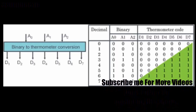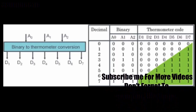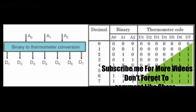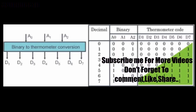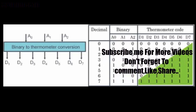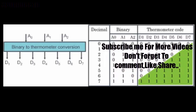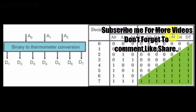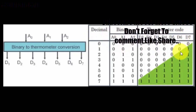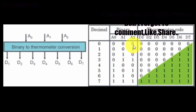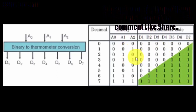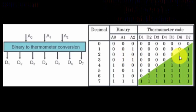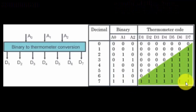Hi YouTube viewers, welcome back to my next tutorial in Xilinx. Today we are going to make a binary to thermometer conversion. This is the aim of our program. Let us see how it looks. This is the truth table of binary to thermometer code. As you can see, the number of ones increases as the binary value increases — zero is zero, one is one, and seven has seven ones.